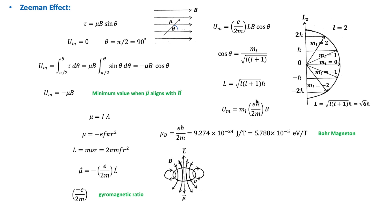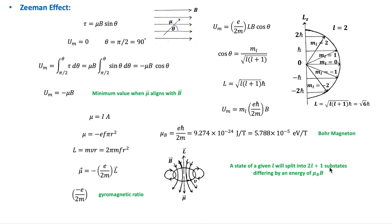Substituting the quantum mechanical results for the quantization of the direction and magnitude of the electron's angular momentum into the potential energy expression gives a new expression. The quantity that appears is known as the Bohr magneton. When an atom is placed in an external magnetic field along the z-axis, the energy of a particular state depends not only on the principal quantum number N, but also on the magnetic quantum number ML. A state of orbital quantum number L will split into 2L+1 substates, differing in energy by mu_B times B.